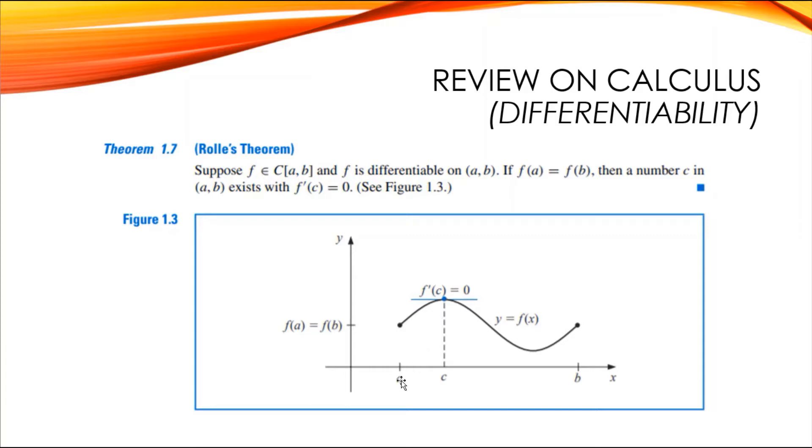So Rolle's Theorem basically states that if you have a function differentiable from A to B, meaning there's no discontinuity in that interval, there exists a C that has a tangent line of 0, which means its derivative is 0. To explain this further and to grasp its definition, I will be presenting an example.